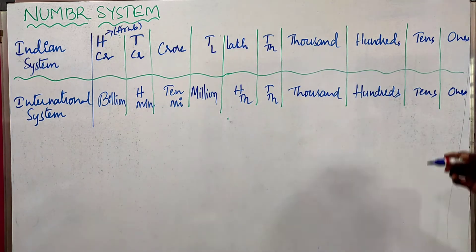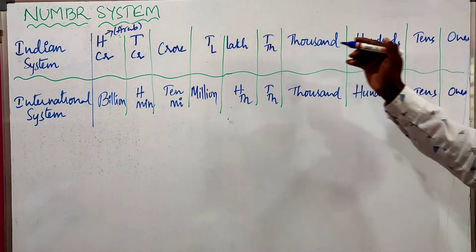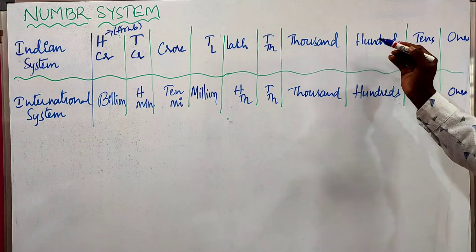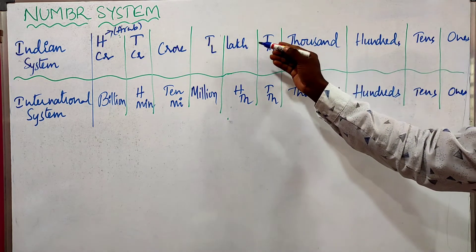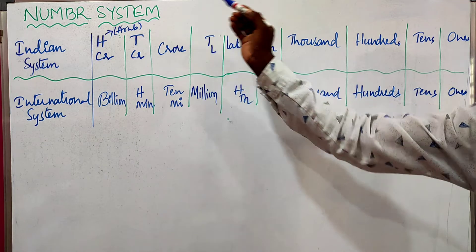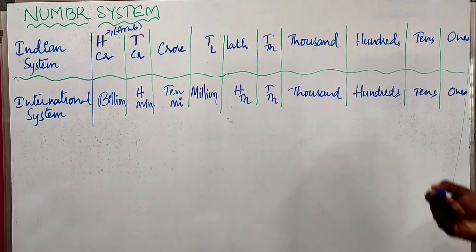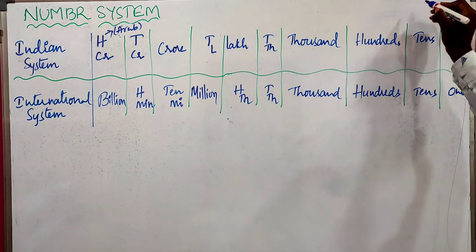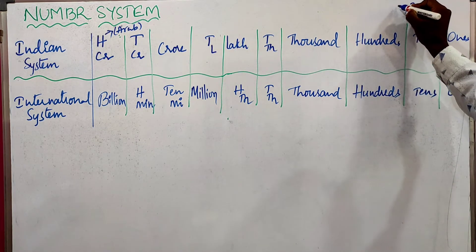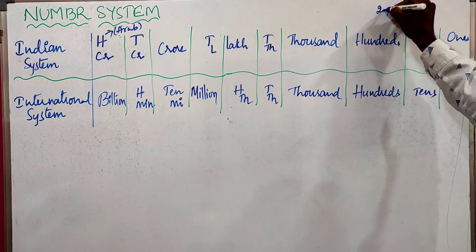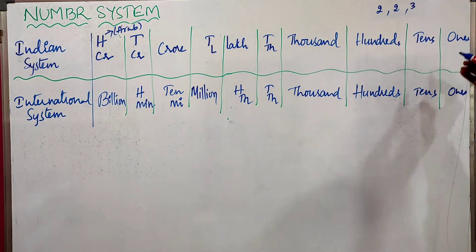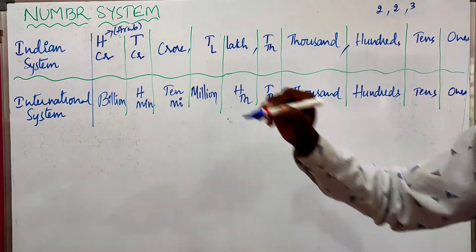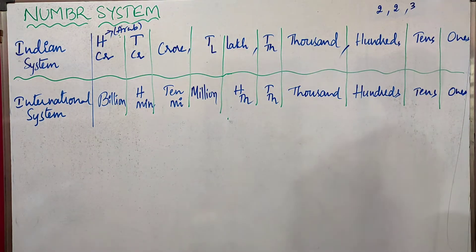In the Indian system, the place values from right side to left side start from 1s, 10s, 100s, 1000s, 10,000, lakhs, 10 lakhs, crores, 10 crores, and 100 crores. While moving from right to left, we place the commas after 3 digits, then 2 digits, then 2 digits. That means after the 100s place, then 1000s, then lakhs, we place the commas.